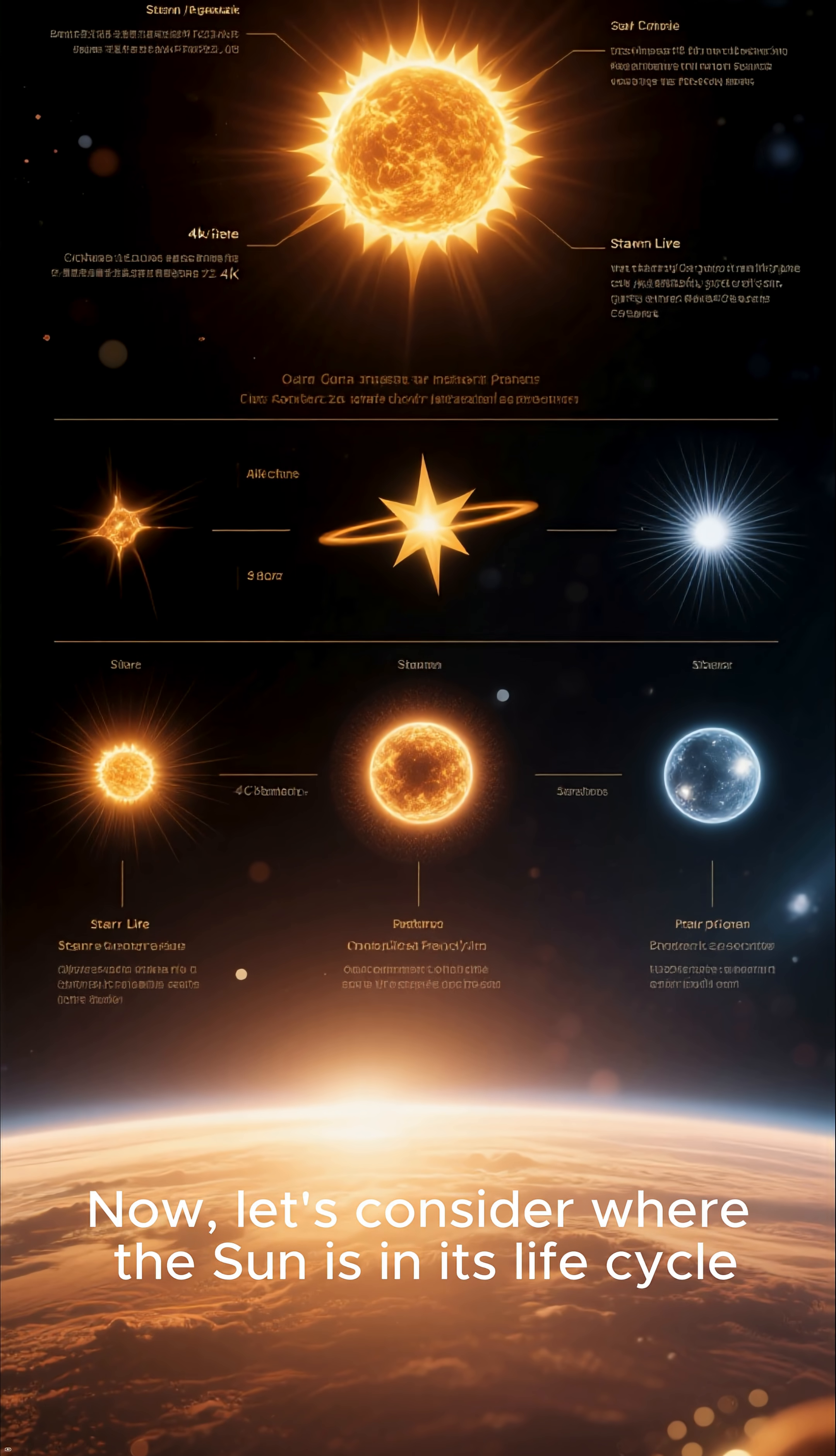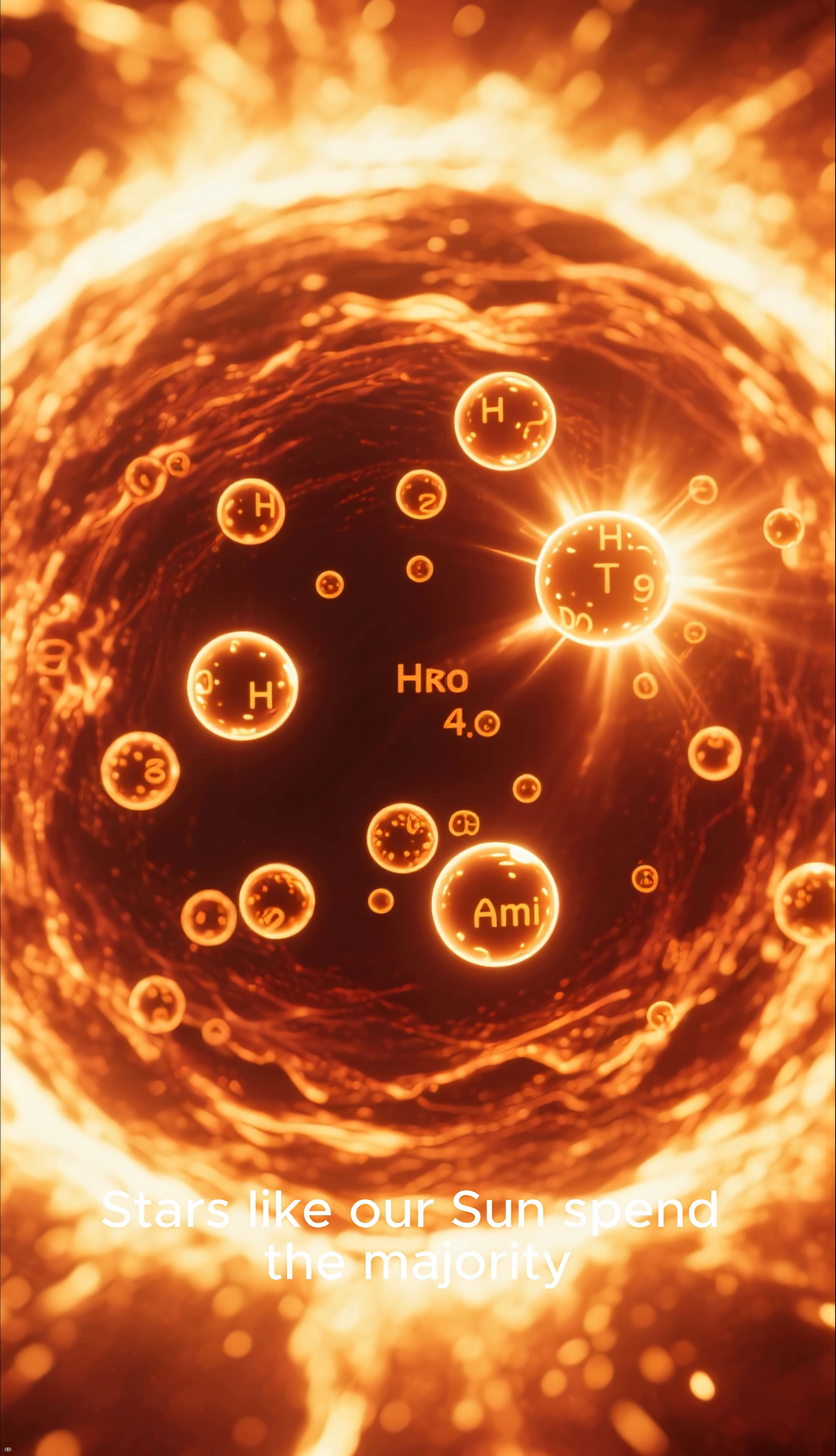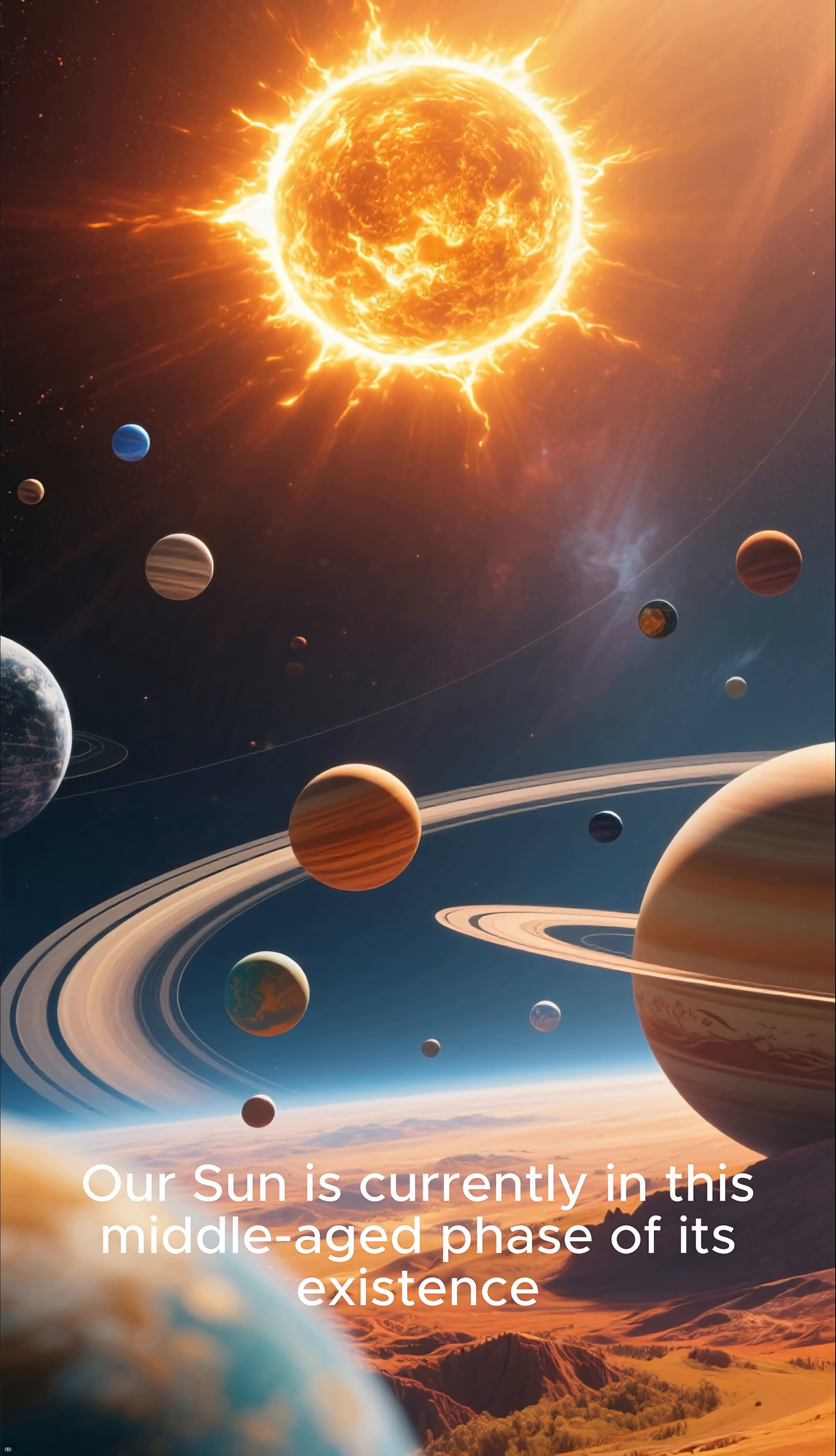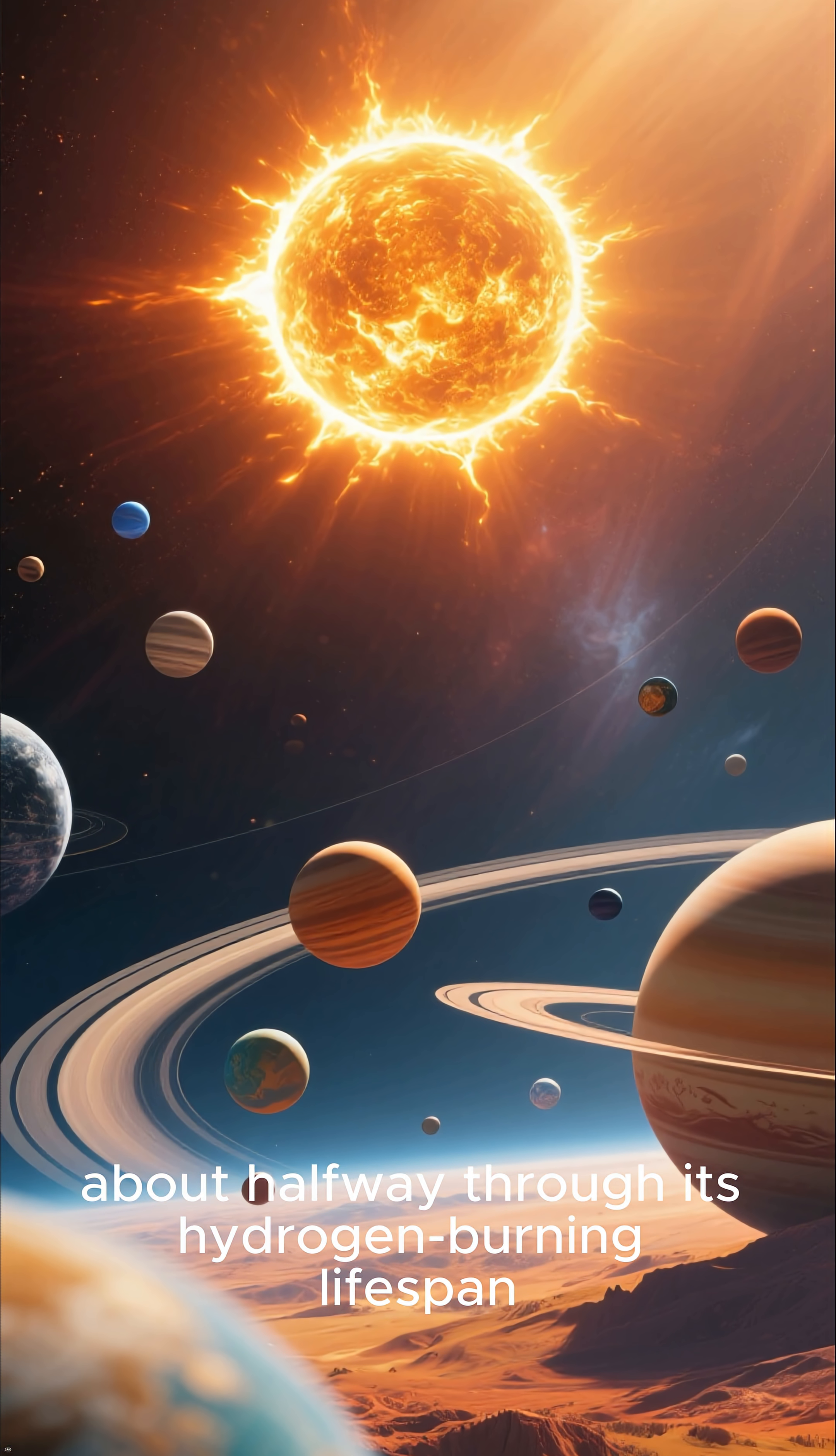Middle age in stellar terms. Stars like our Sun spend the majority of their lives fusing hydrogen into helium in their cores, a stable phase known as the main sequence. Our Sun is currently in this middle-aged phase of its existence, about halfway through its hydrogen-burning lifespan.